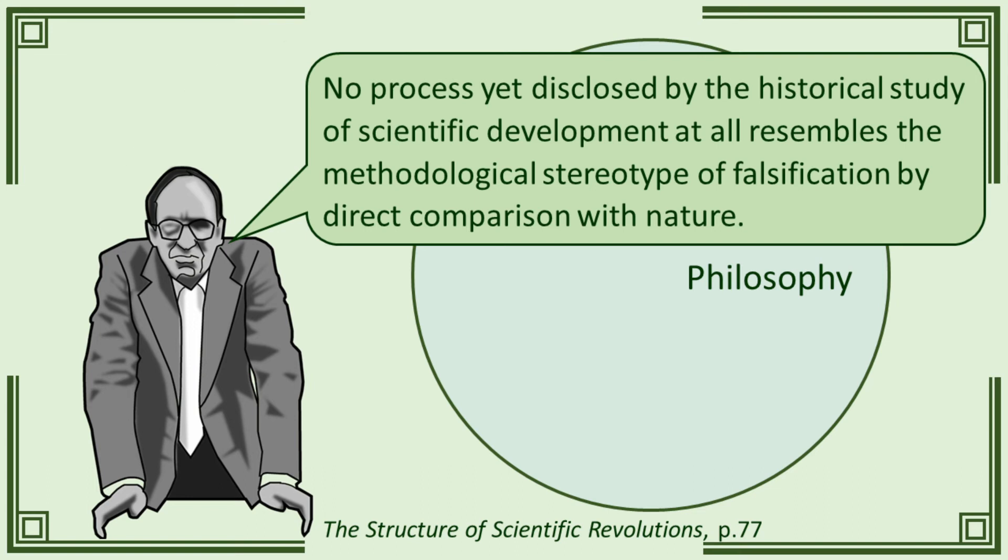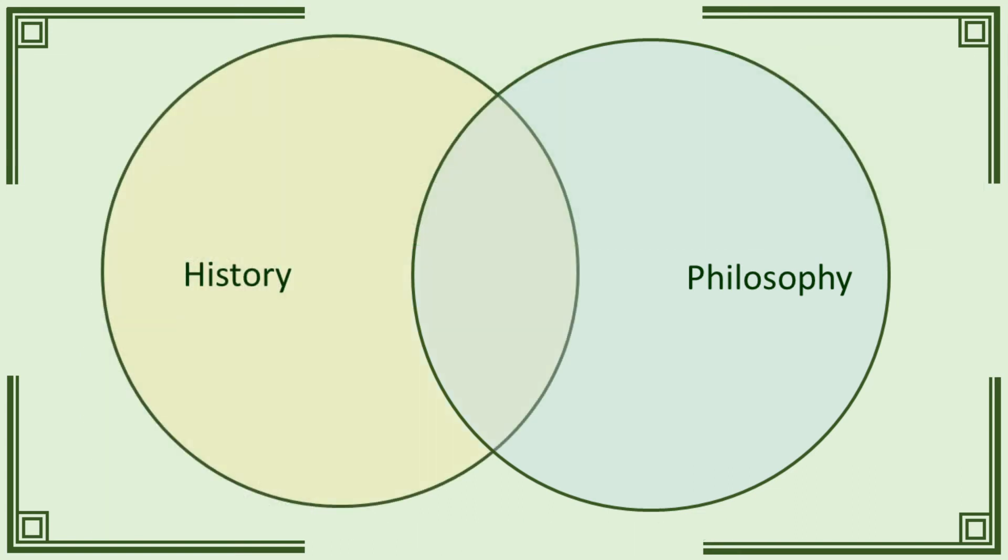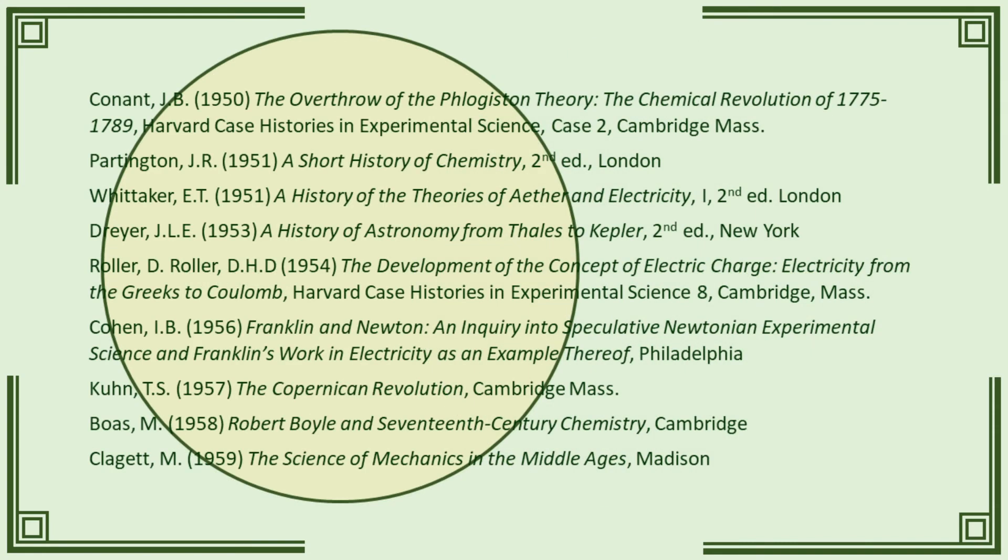And if frequency of citation is a guide, it is historical detail above all that shaped structure. Of the thirteen most frequently cited works, nine of them are not only histories, but they are histories published in the 1950s, only a short time before the book itself. Structure can be seen not as originating a historical re-evaluation of scientific progress, but as reflecting a change in the practice of history of science. Something which is mirrored in the mid-twentieth century in the history of medicine.